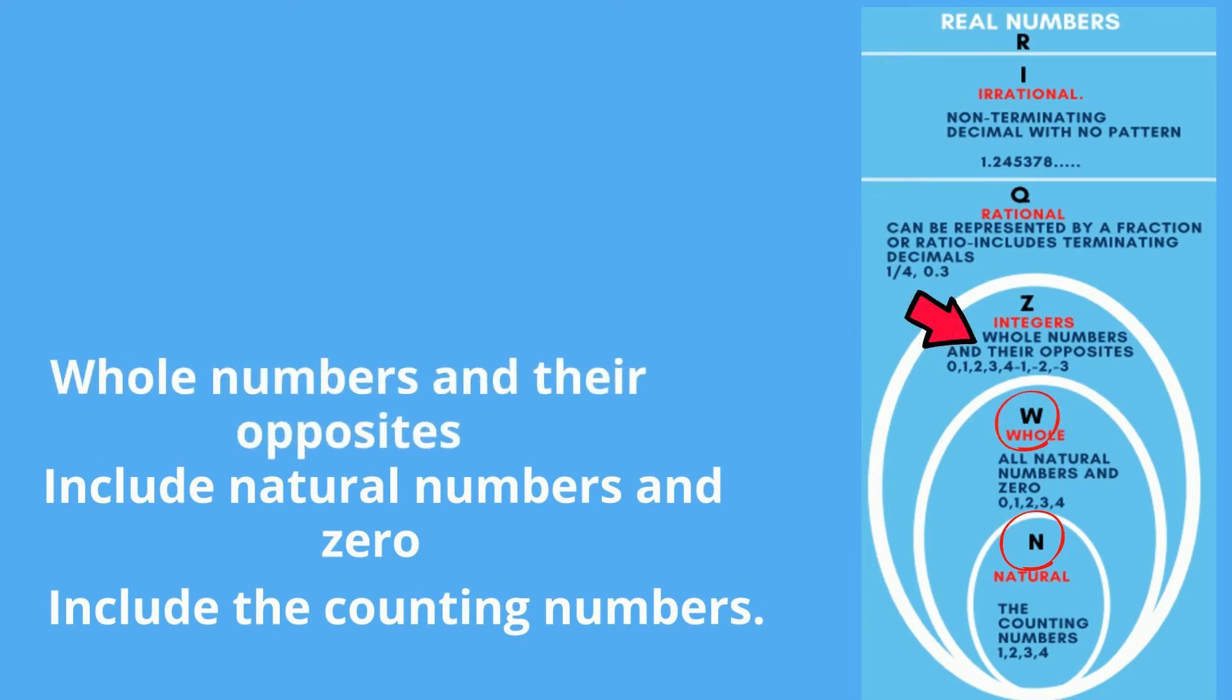Integers include whole numbers and their opposites. For example, 1, negative 1, 2, negative 3, etc. Integers are represented with a Z.